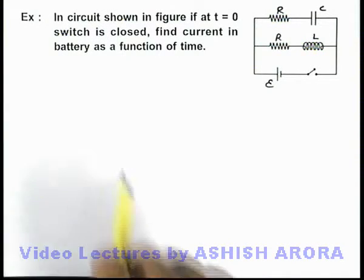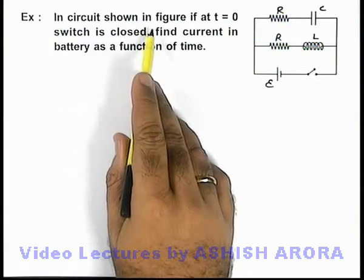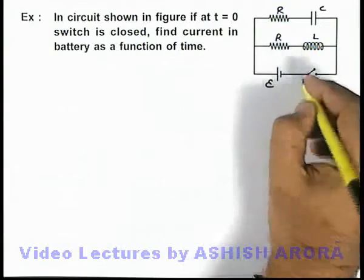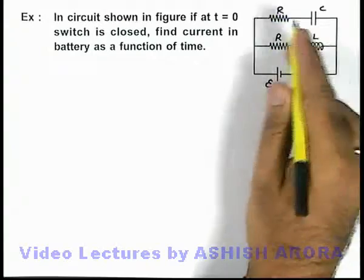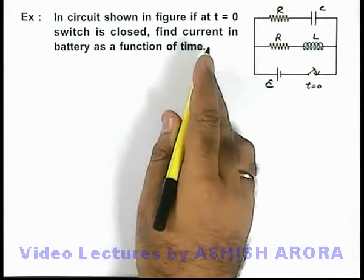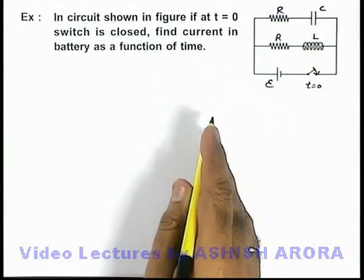In this example we are given that in the circuit shown in figure, if at t equal to zero the switch is closed, that means the battery is applied across the circuit. We are required to find the current in battery as a function of time.